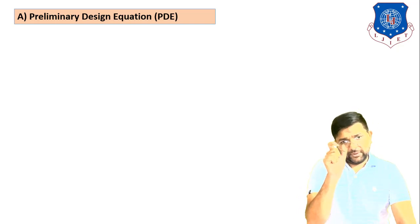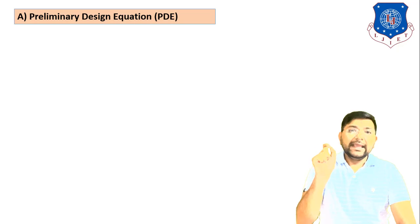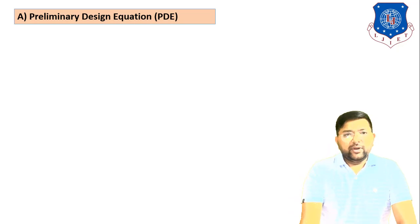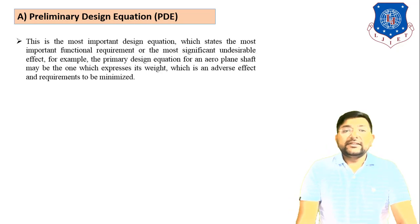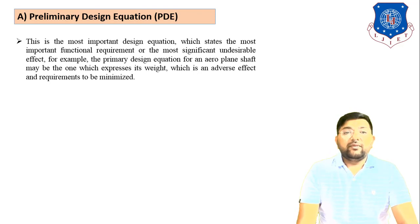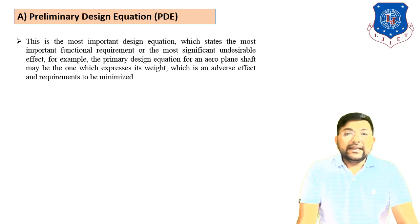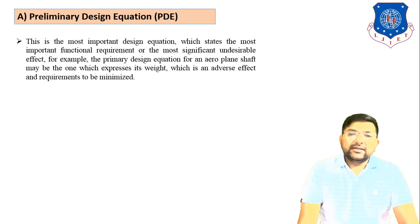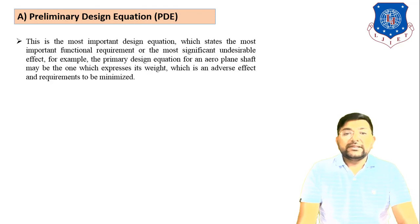The Preliminary Design Equation, abbreviated as PDE, is the most important design equation. It states the most significant functional requirement or the most significant undesirable effect. For example, the primary design equation for an aeroplane shaft may be the one which expresses its weight — an adverse effect — which is a requirement to be minimized.